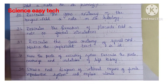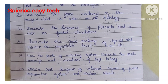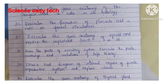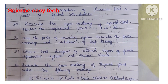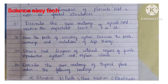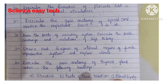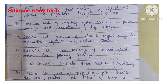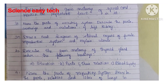Thirty-sixth question, describe the formation of placenta and add a note on fetal circulation. Thirty-seventh question, describe the gross anatomy of spinal cord and mention the important tracts in it. Thirty-eighth question, name the parts of the excretory system and describe the parts, coverings and relations of left kidney.